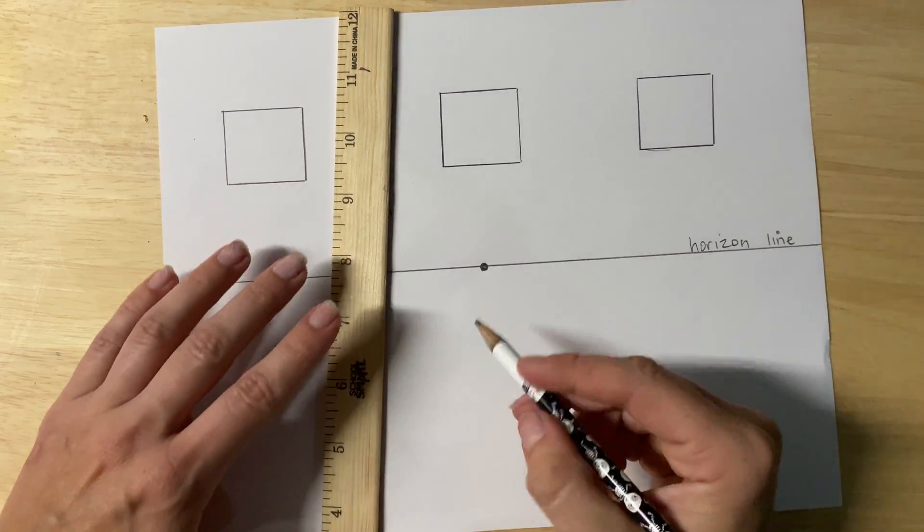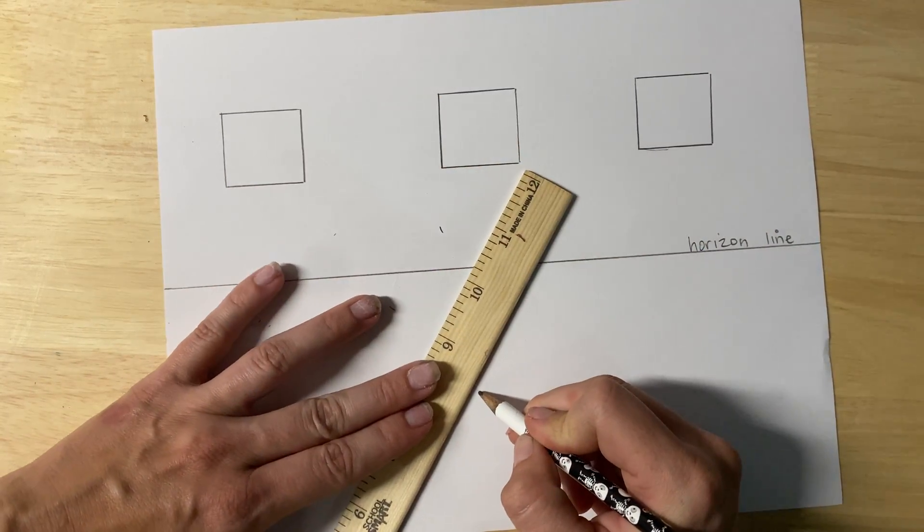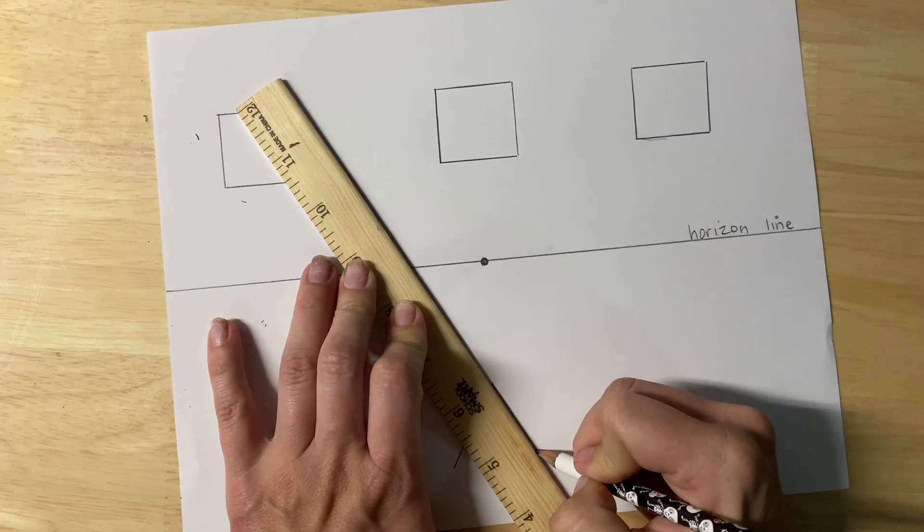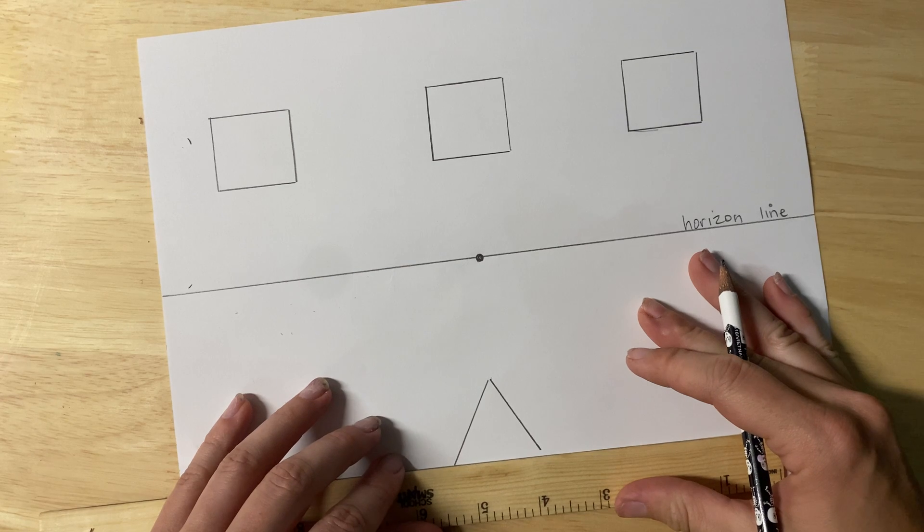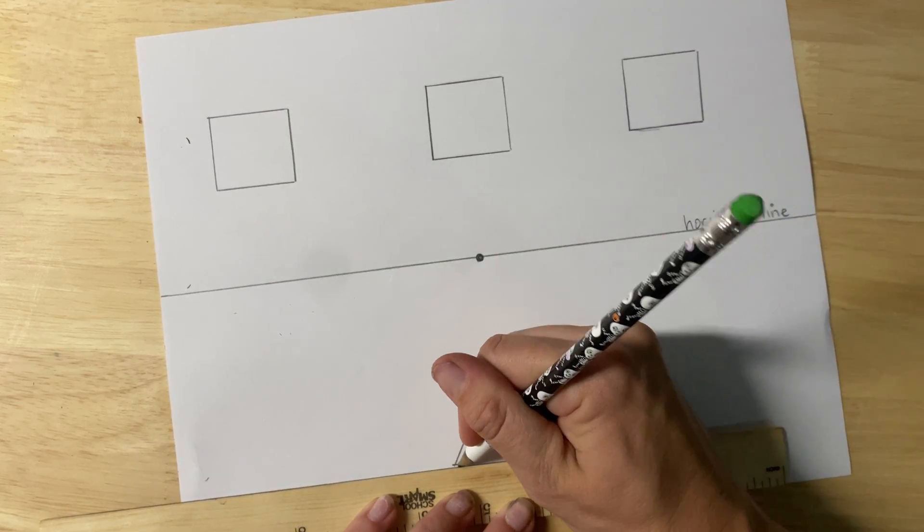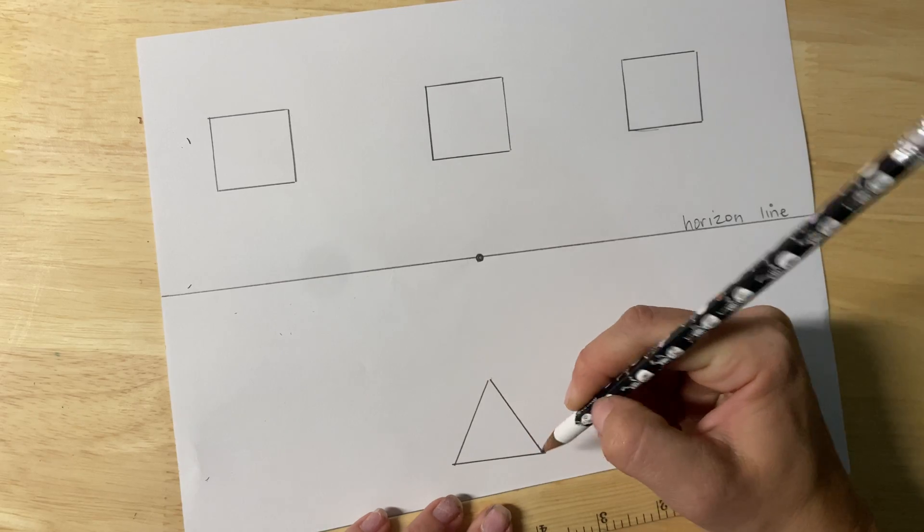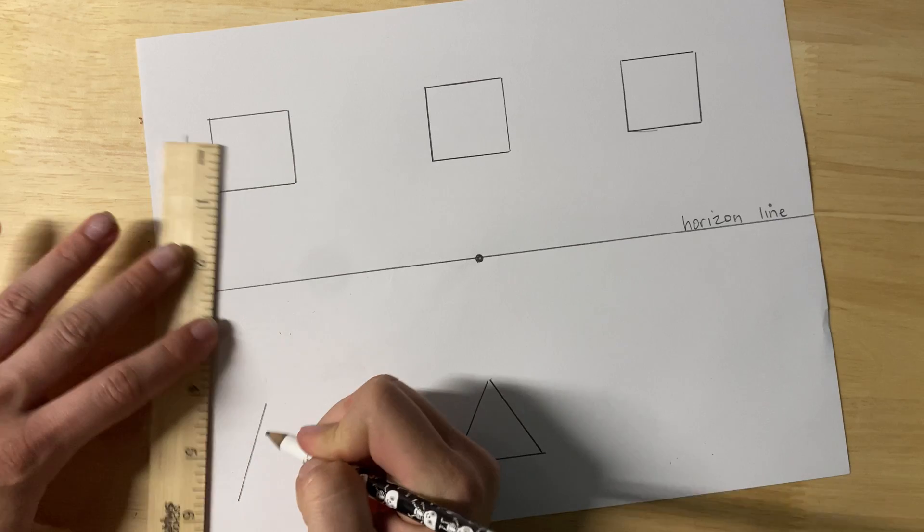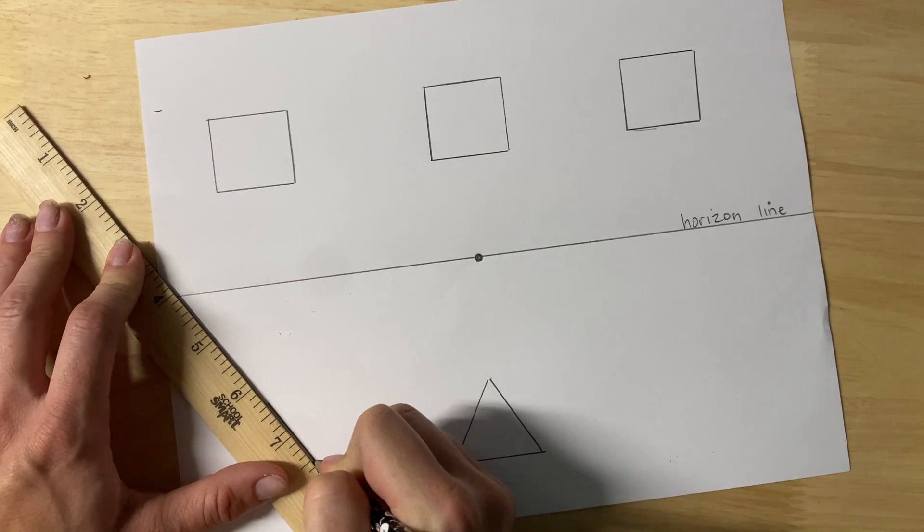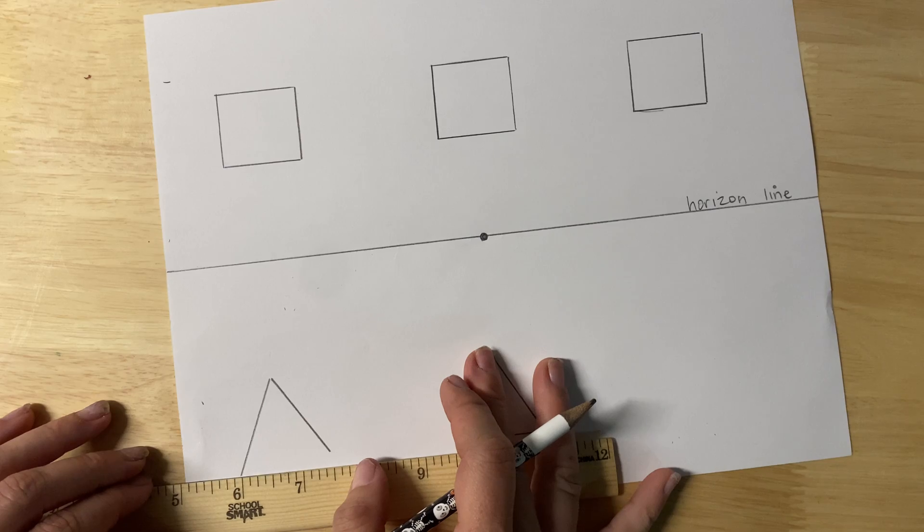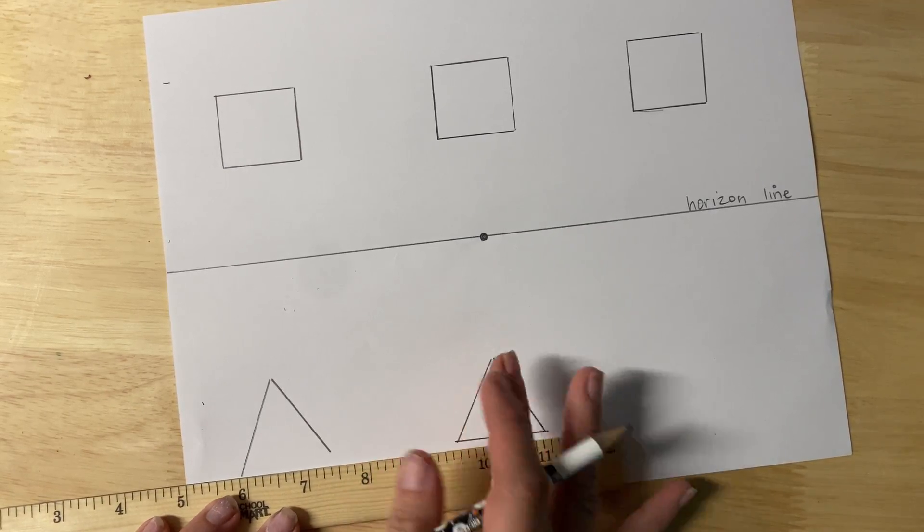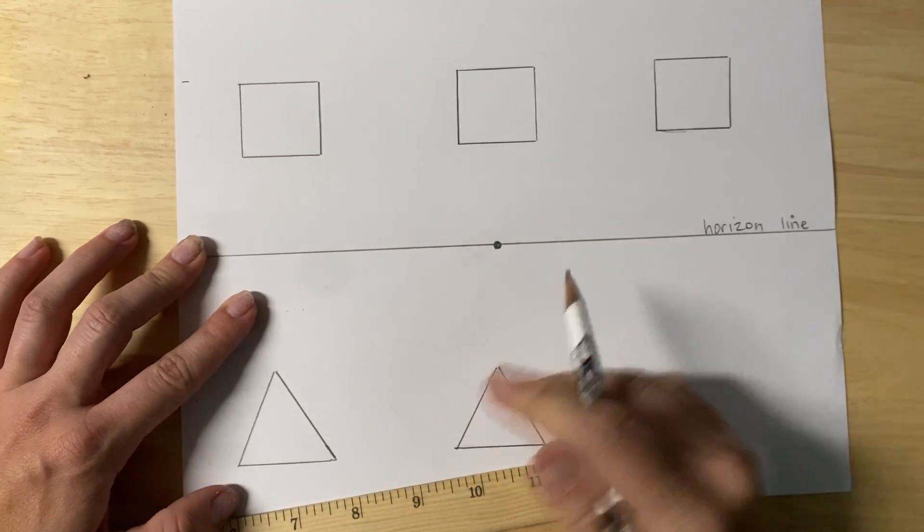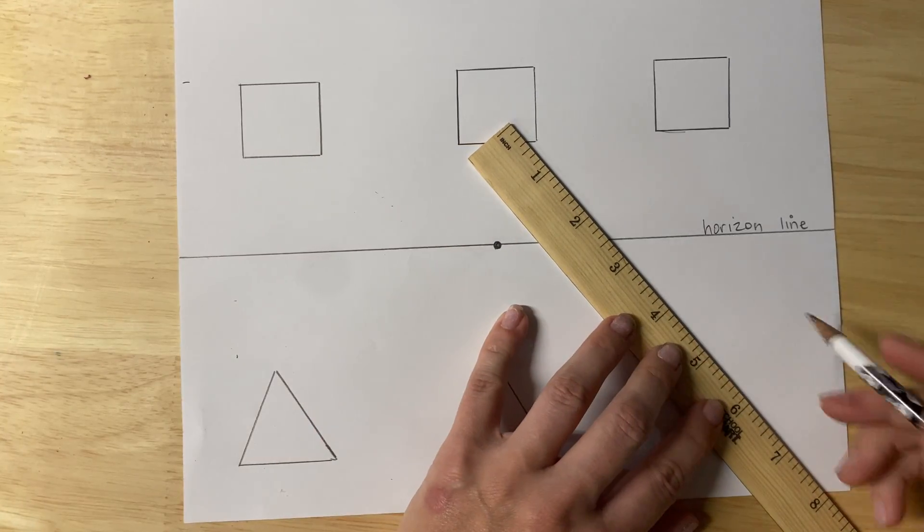Okay, and then below here, we're going to draw triangles. So one directly below my vanishing point. One to the left. And one over here on the right.